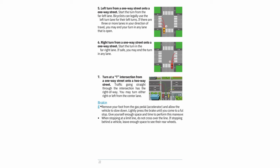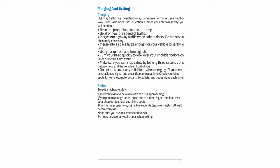7. Turn at a T-intersection from a one-way street onto a two-way street — traffic going straight has the right of way; you may turn either right or left from the center lane. Braking: Remove your foot from the gas pedal/accelerator and allow the vehicle to slow down. Lightly press the brake until you come to a full stop — give yourself enough space and time. When stopping at a limit line, do not cross over the line. If stopping behind a vehicle, leave enough space to see their rear wheels.